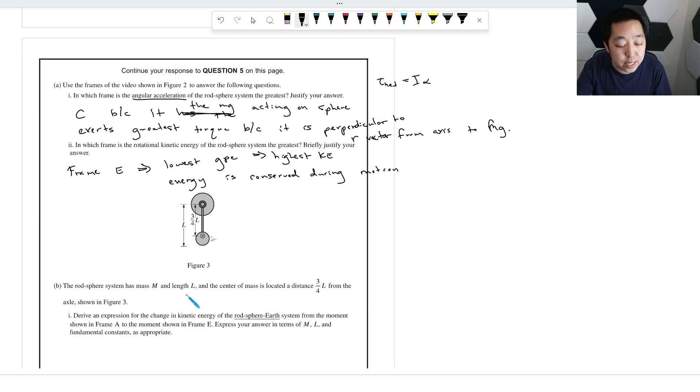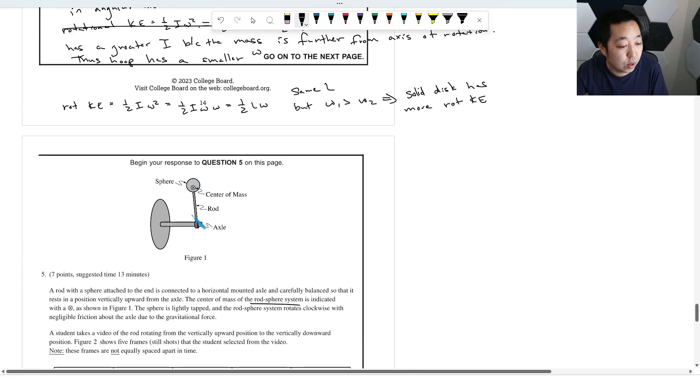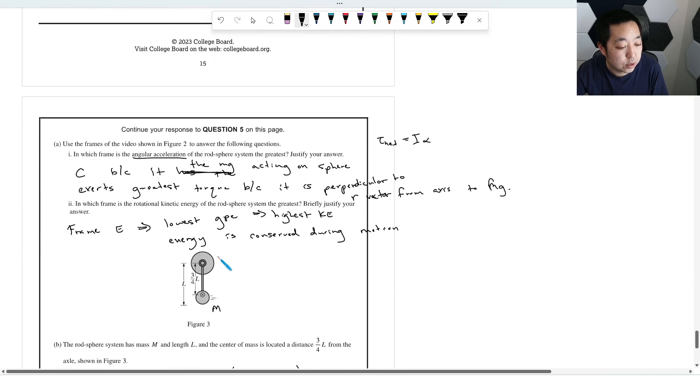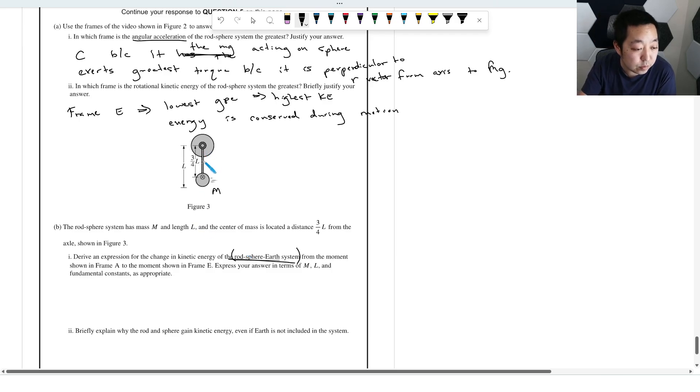Okay, the rod sphere system has a mass M and length L. And the center of mass is located three quarters of L from the axle shown. Derive an expression for the change in kinetic energy of the rod sphere earth system. So this is really important when they define the system. That means we're including gravitational potential energy, and any kinetic energy we got from the moment of frame A to the moment shown in frame E. Express your answer in terms of M, L, and fundamental constants as appropriate. Okay, so we have a rod sphere system here. We have this rod. We don't know how the mass is split up, but I guess that's okay.